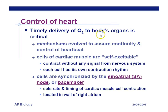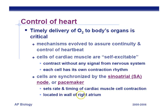Control of the heart. Timely delivery of oxygen to the body's organs is critical. The mechanisms evolved to ensure continuity and control of the heartbeat are important for making sure the heart doesn't miss a beat. We have something called a pacemaker — your heart has its own natural pacemaker, and you only need a man-made one if your natural one doesn't function properly. The pacemaker is also called the SA node, and it's located on the right atrium. It synchronizes the contraction of the heart.